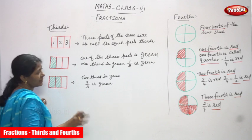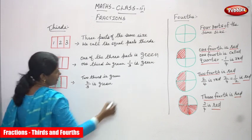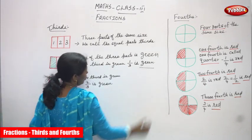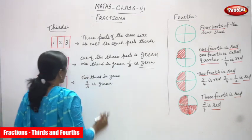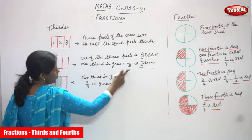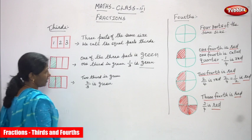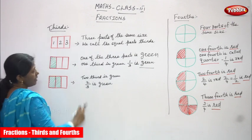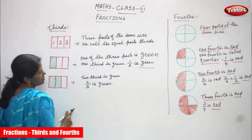One third is one by three — that is green. One third means one by three in fraction. And two thirds is green — two by three is green.